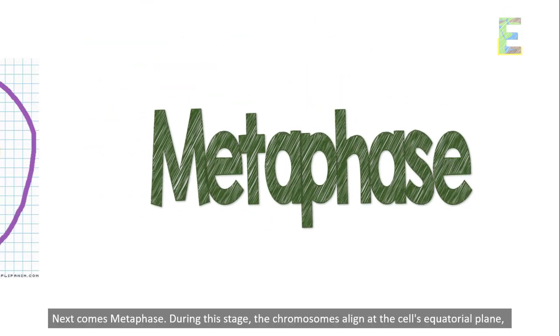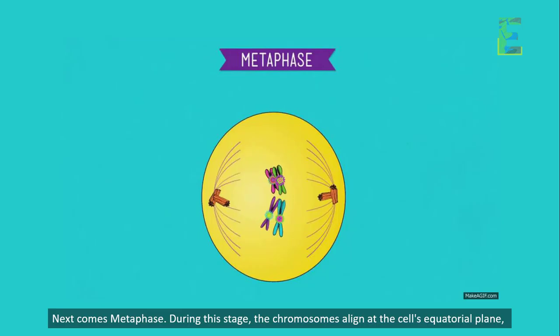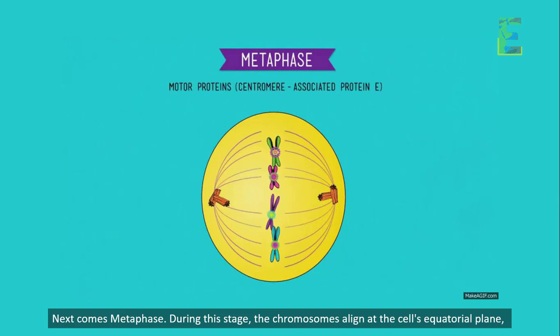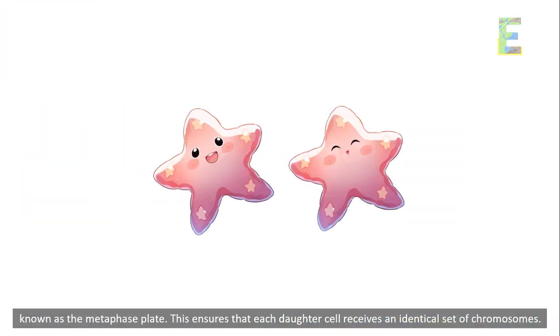Metaphase. Next comes metaphase. During this stage, the chromosomes align at the cell's equatorial plane, known as the metaphase plate. This ensures that each daughter cell receives an identical set of chromosomes.